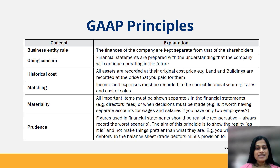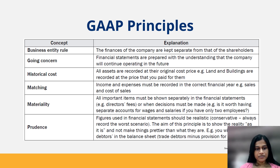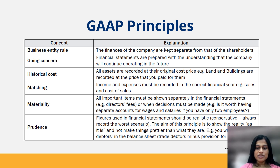Historical cost states that all assets are recorded at their original cost price — for example, land and buildings are recorded at the price that you paid for them. The matching concept says that income and expenses must be recorded in the correct financial year: income in the year that they are earned and expenses in the year that they are incurred.